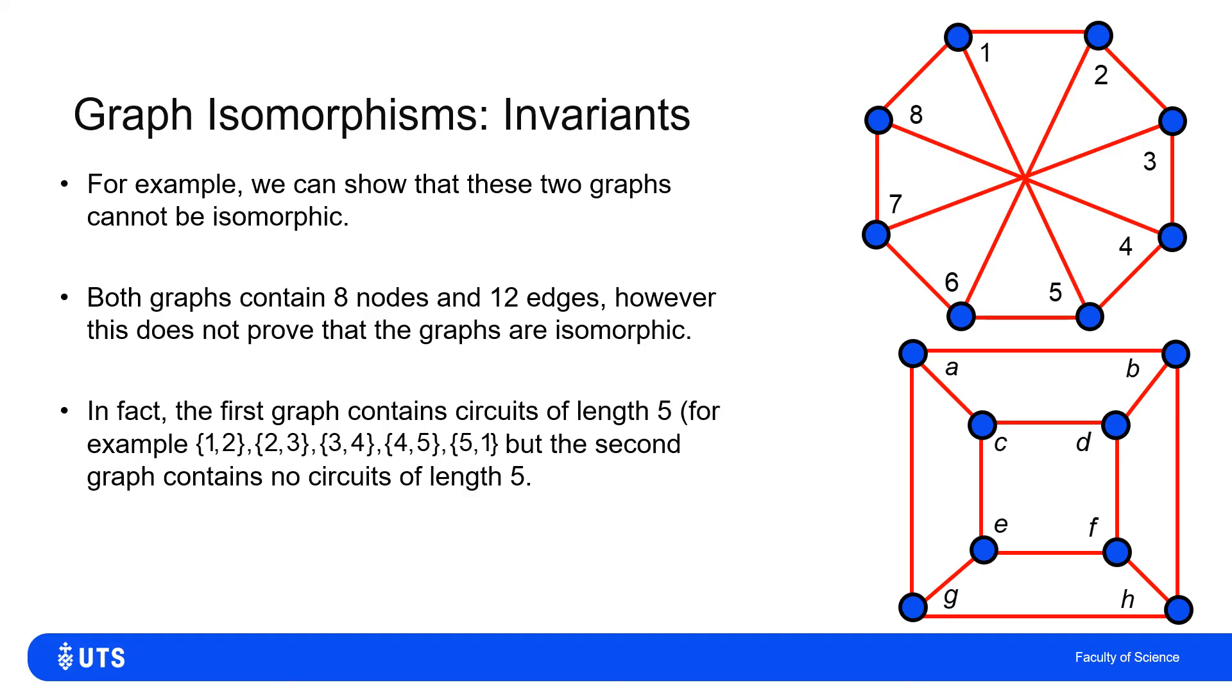In the second graph, the lower graph, there is no node where I can get back to it in 5 moves. So the fact there are circuits of length 5 in the top graph, and there's no circuits of length 5 in the bottom graph, means that these graphs are not isomorphic.